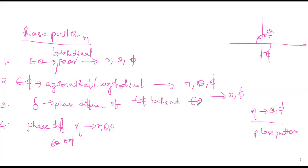So the three patterns: the phase pattern has variation of eta with respect to theta and phi. The other two—field pattern and power pattern—show variation of electric field intensity and radial Poynting vector component, respectively, with respect to theta and phi.